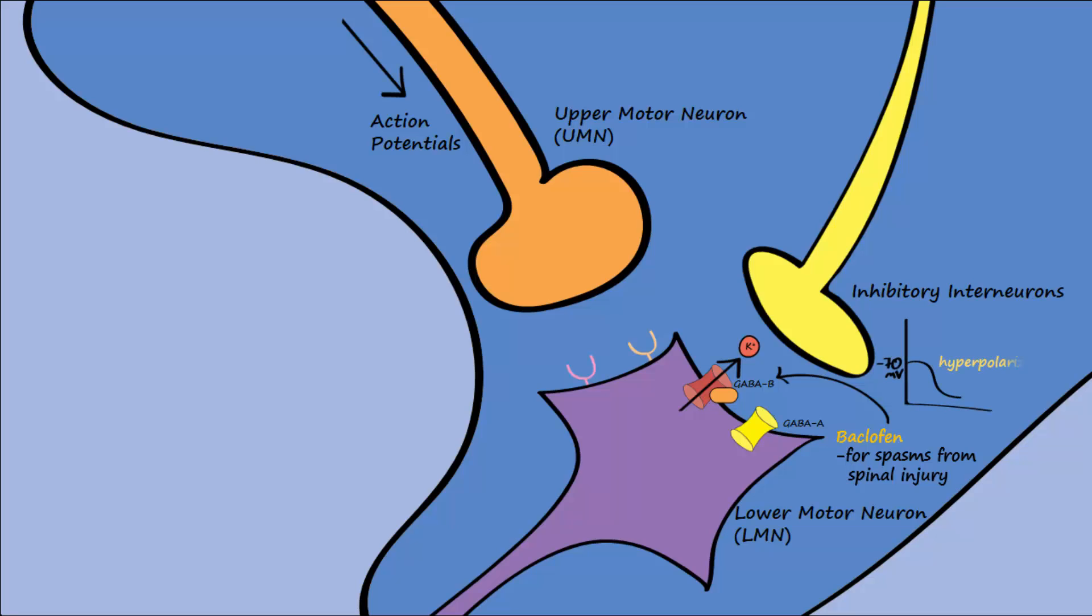There are also GABA-B receptors in the presynaptic membrane of the upper motor neuron. Activation of these receptors leads to less release of calcium ions and consequently less release of excitatory neurotransmitters like norepinephrine and glutamate from the UMN onto the LMN. Consequently, less action potentials travel down the LMN to reach the muscle.